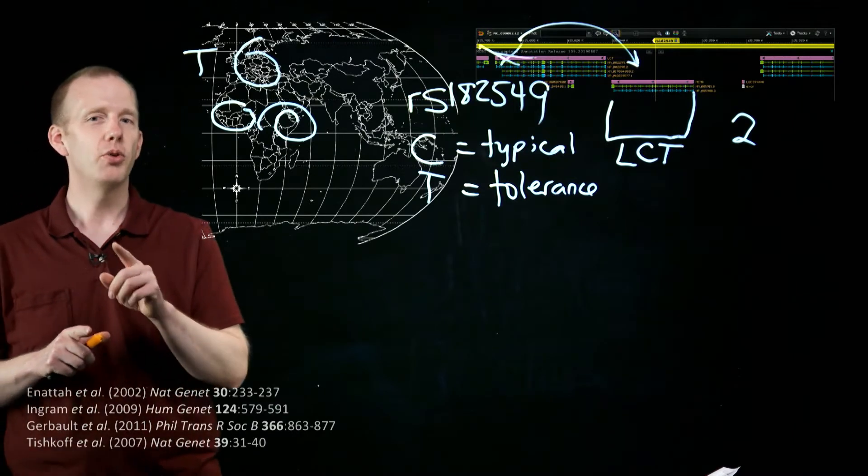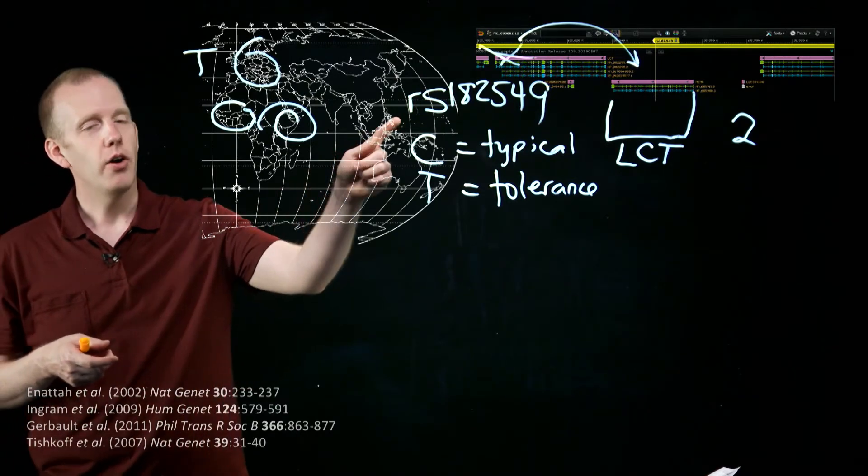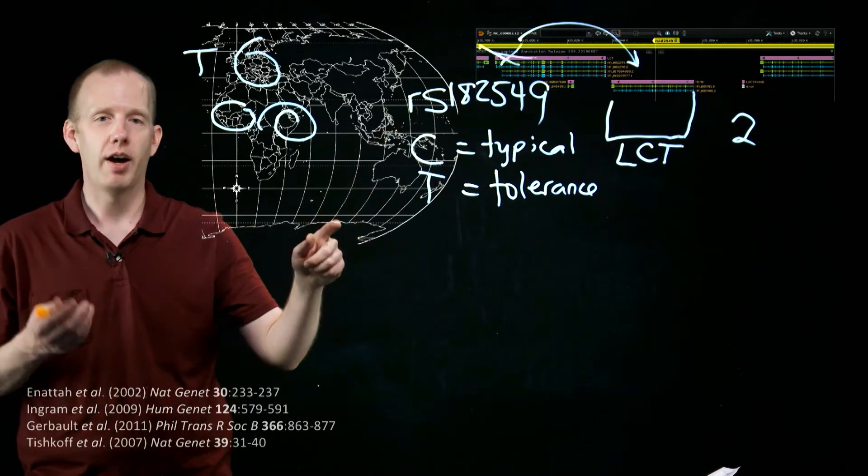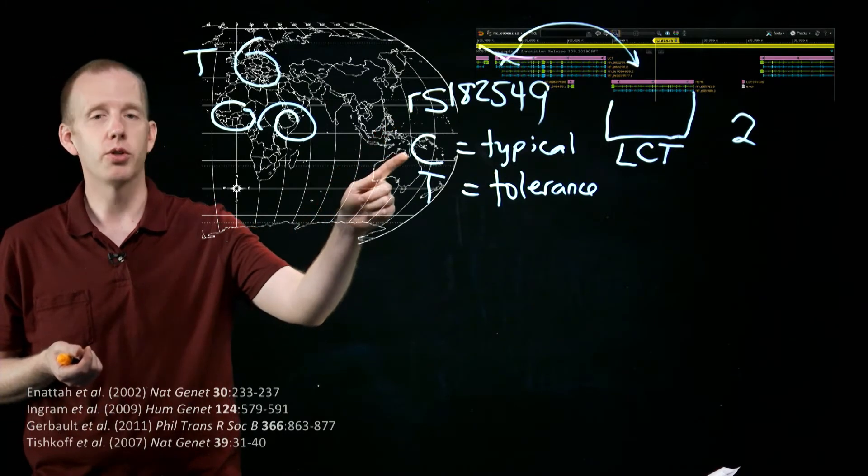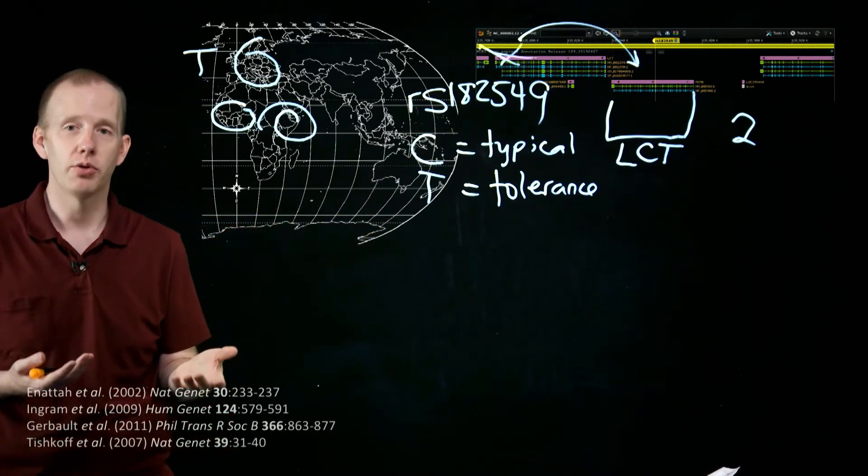So just because you get your genome sequenced or genetic testing, if you found out your genotype at RS182549 and it said you were C, typical, that is, you were probably lactose intolerant,